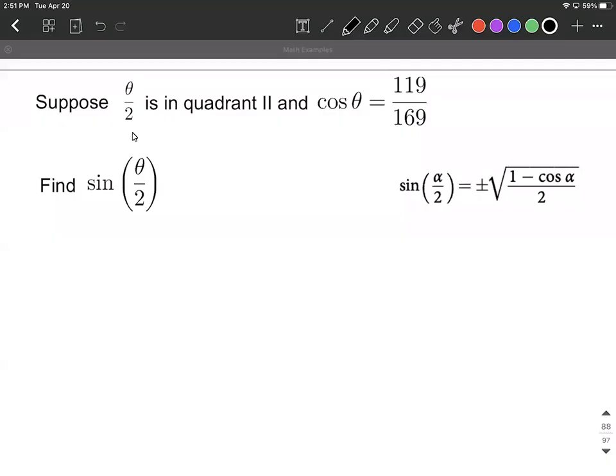In this example, we know that theta divided by 2 is in quadrant II and that cosine of theta is given to us to be 119 divided by 169. Our goal is to use a half angle formula and figure out what sine of theta divided by 2 is going to be.